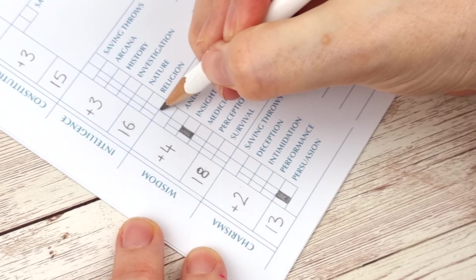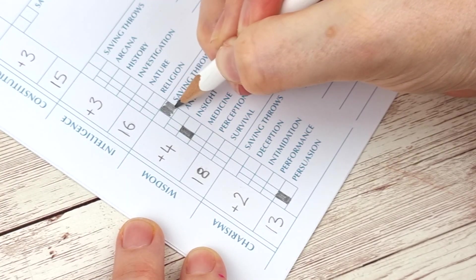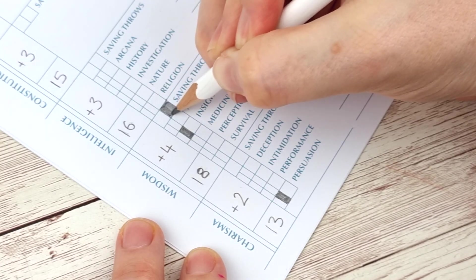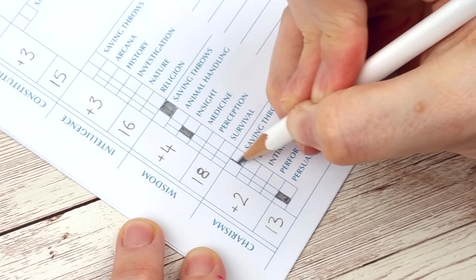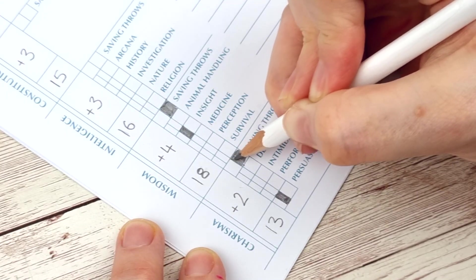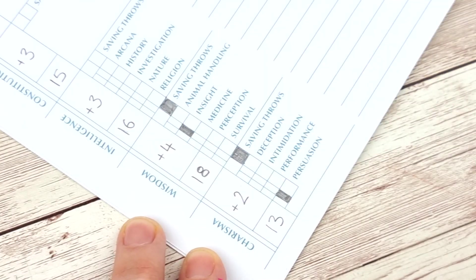You should make a mark next to the skills and abilities for their respective proficiencies and saving throws. The armor, weapons and tools proficiencies can be written on the sheet. There are some classes that allow you to use double your proficiency bonus on certain rolls and that's referred to as expertise. You can mark these skills a second time to indicate that these skills have double proficiency.